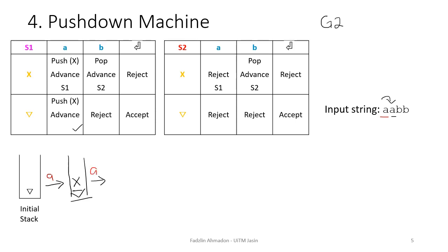Next, we read X with A. X with A says push X and advance. Our stack previously had a single X; now we push another X on top of it and advance to the next pointer, which means we are now reading B.